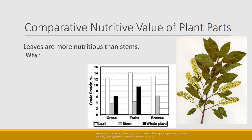Looking at leaves versus stems — from the Lyons reading — leaves are about three times more digestible than stems in grasses. Forbs show a similar pattern, nearly four times more digestible than their stems. Browse leaves are also more digestible than stems. Why? Leaves are meant for photosynthesizing, so they have a lot of cell contents. Stems are structural — they hold leaves up to photosynthesize — so they have more structural carbohydrates and fewer cell contents, making leaves more digestible to the animal.